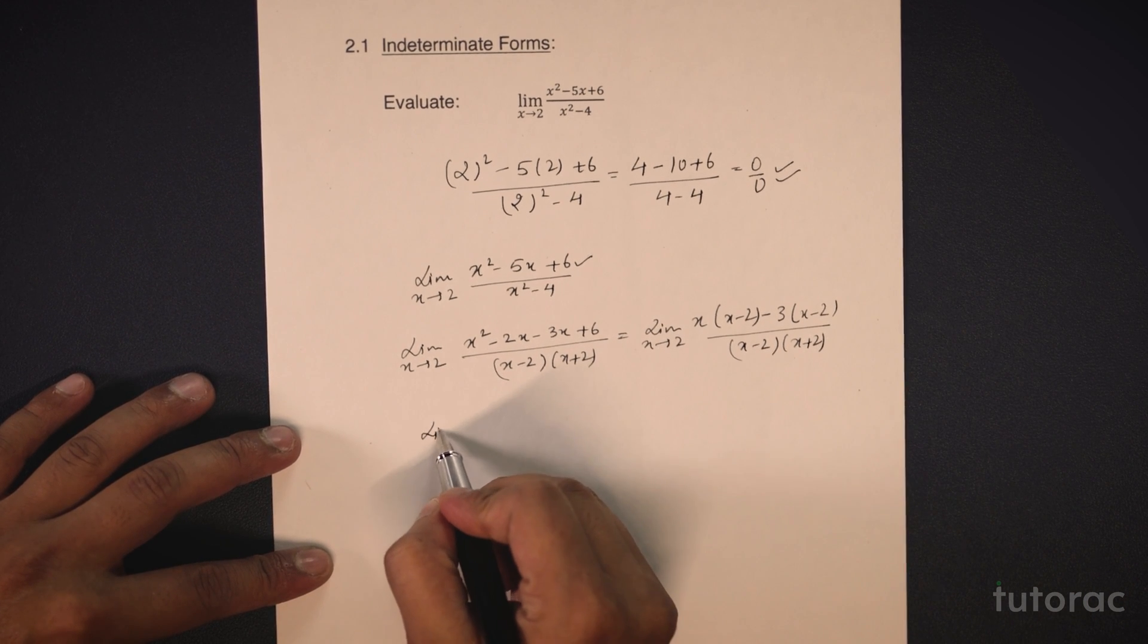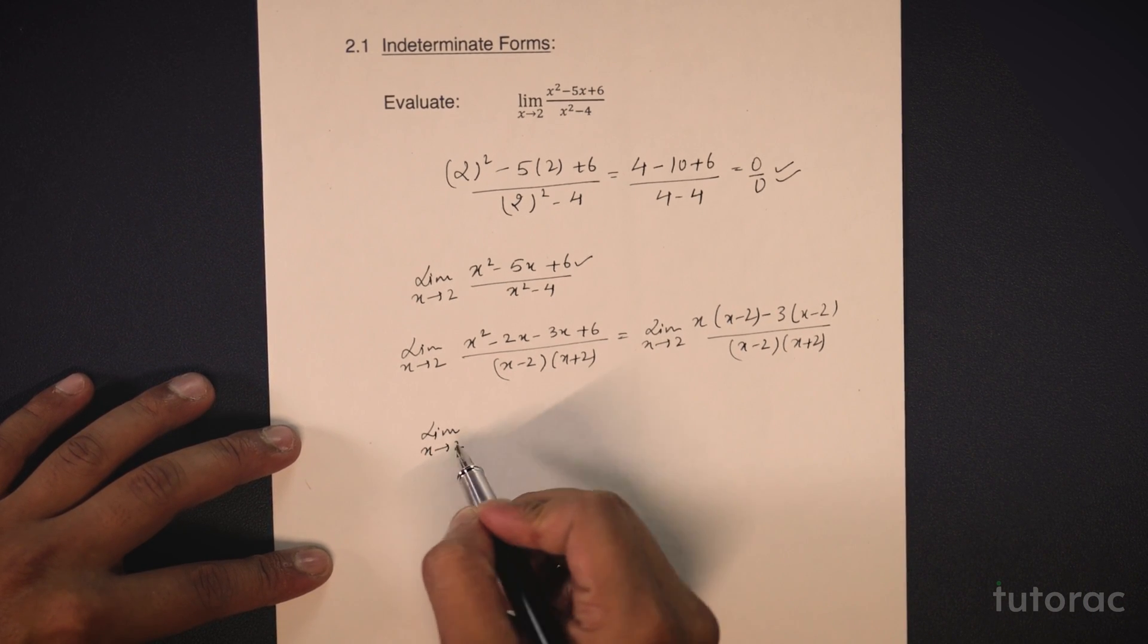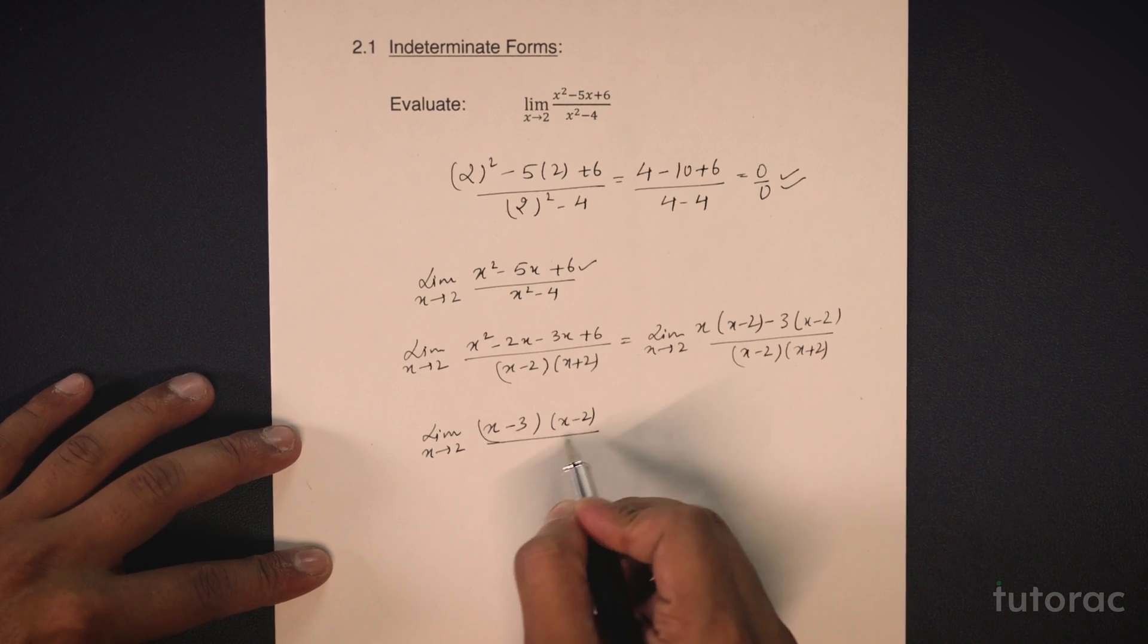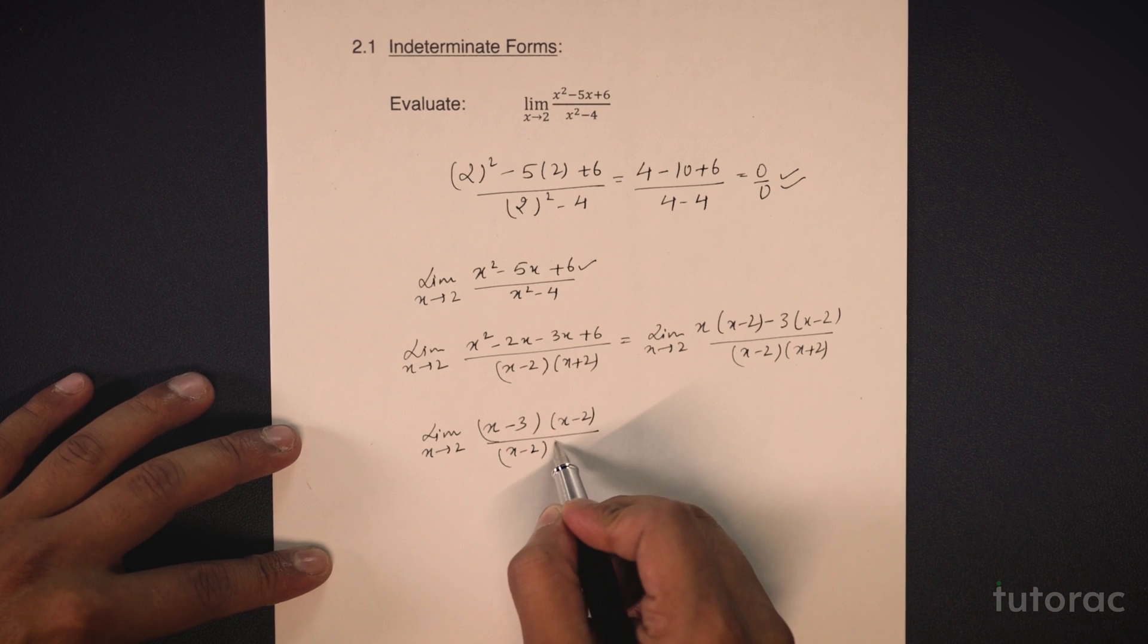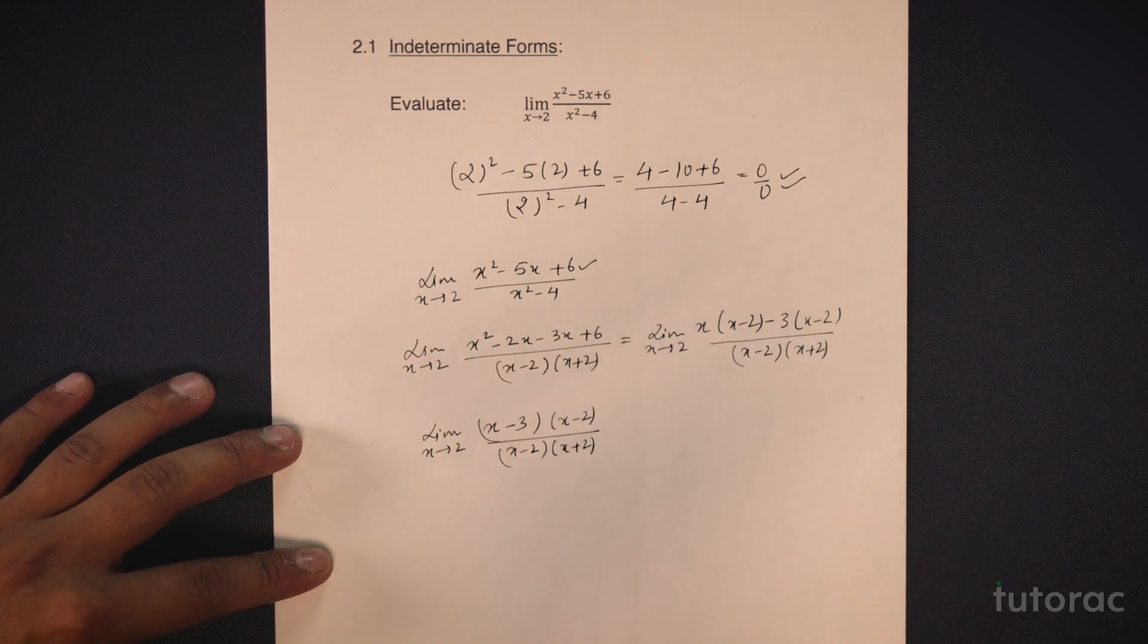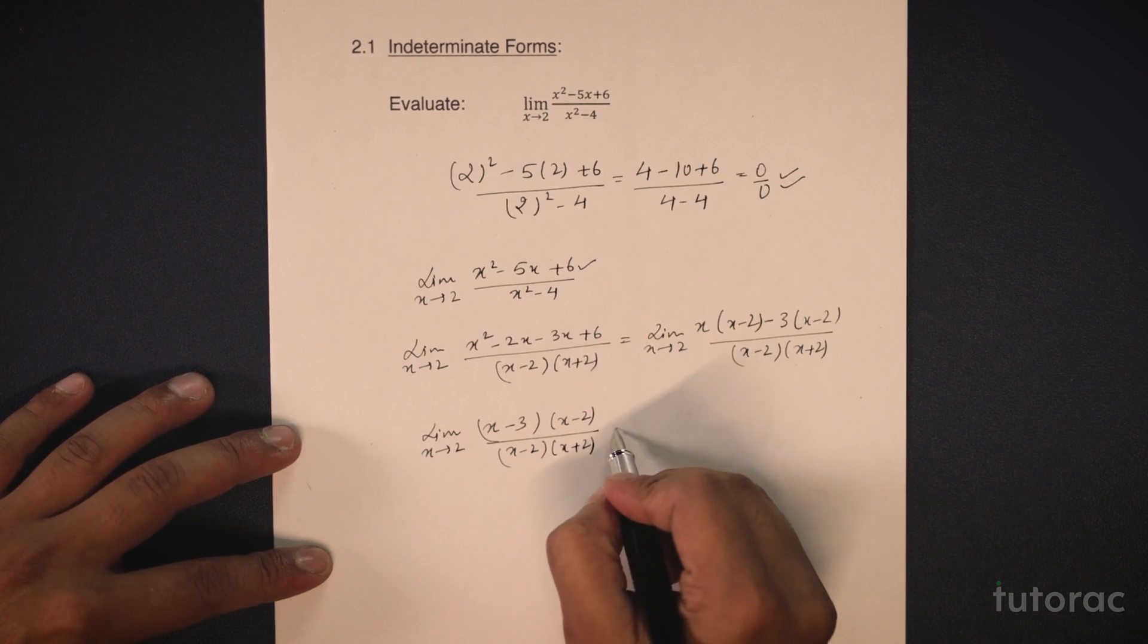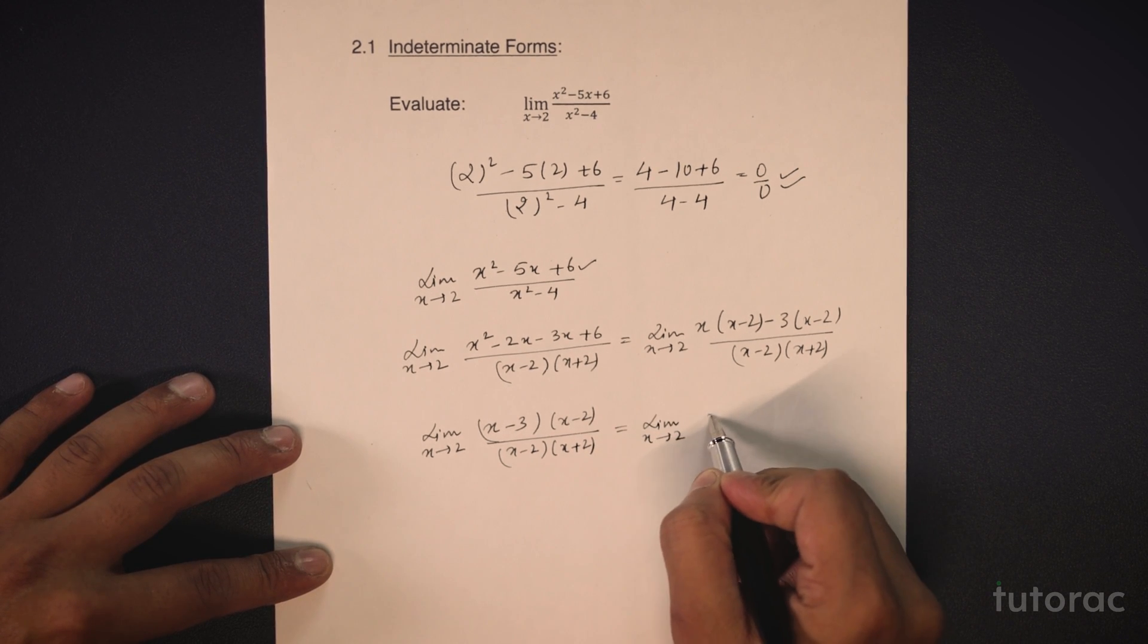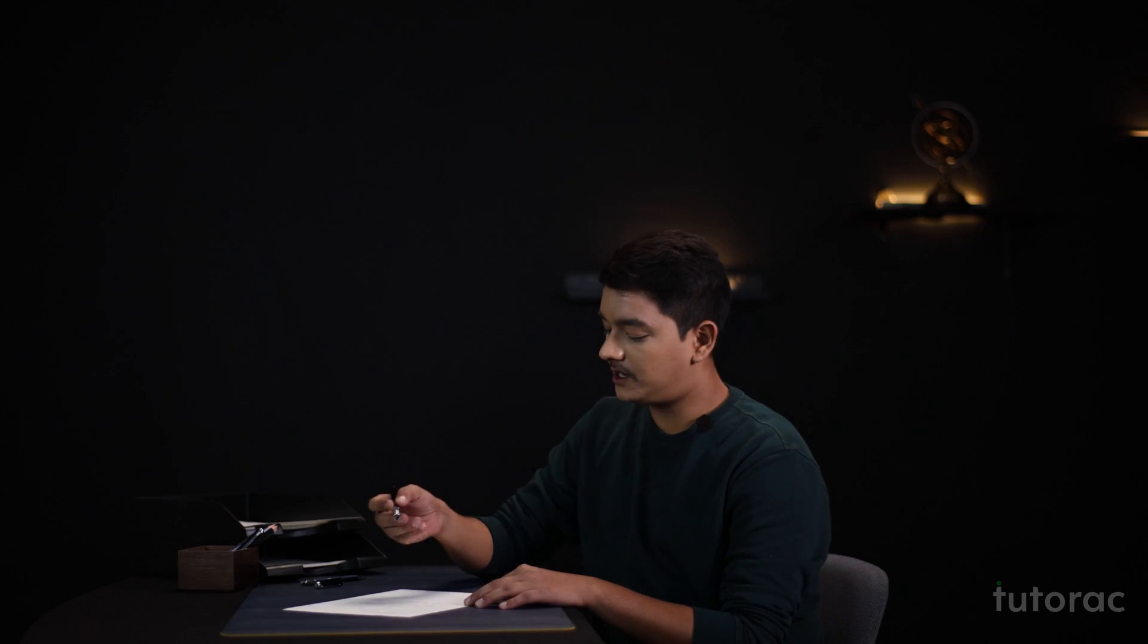Now we can get limit x tends to 2, x minus 3 multiplied by x minus 2 upon x minus 2 multiplied by x plus 2. We will finally get limit x tends to 2, x minus 3 upon x plus 2.